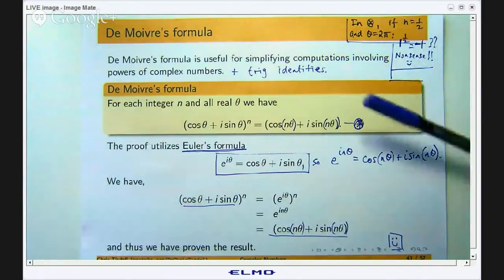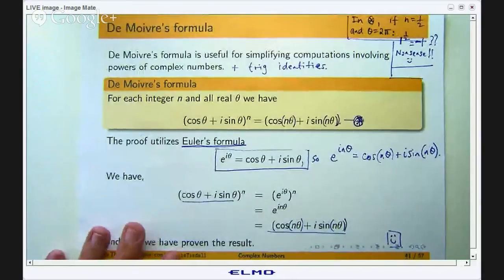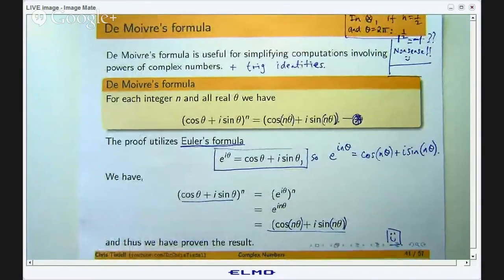So that is the quickest and simplest proof that I have seen for De Moivre's formula. It just uses Euler's formula. Now, like I said before, some people use induction to prove De Moivre's formula, but if you just take Euler's formula and apply it, then it is very, very quick indeed.